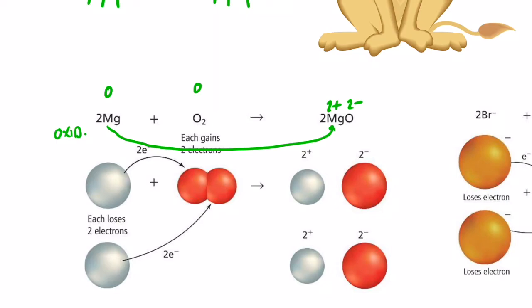What happened to the oxygen? Well, the oxygen went from an oxidation number of zero to two negative. It gained electrons. So, we say that the oxygen in this reaction was reduced.